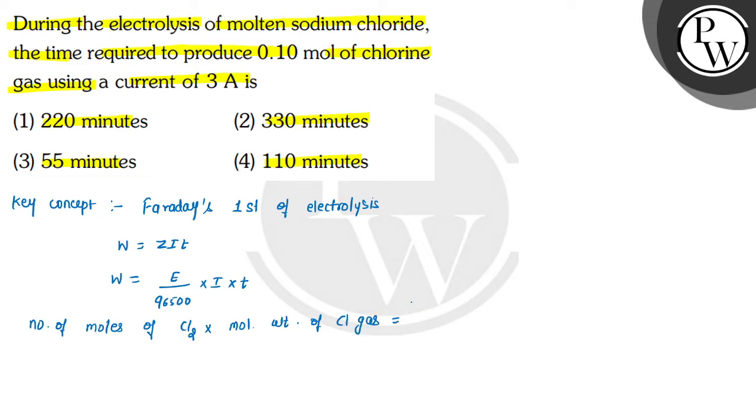multiplied by molecular weight of chlorine gas will be equal to equivalent weight of chlorine gas, which is represented as E. So we can write equivalent weight of chlorine multiplied by I, which is current, multiplied by T, that is time, divided by 96500 Faraday. So here we can write the reactions firstly.